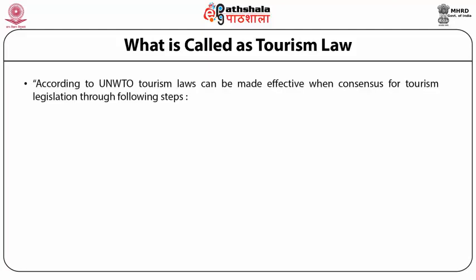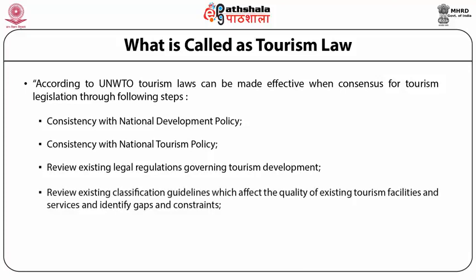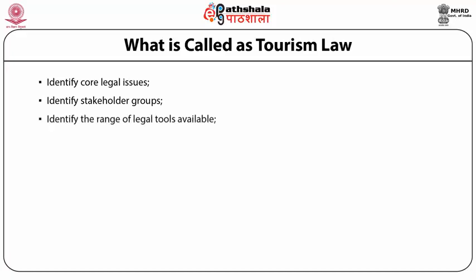According to the United Nations World Tourism Organization, tourism laws can be made effective when consensus for tourism legislation is brought through the following steps: first, consistency with the national development policy; then consistency with the national tourism policy; then a review of existing legal regulations governing tourism development; a review of existing classification guidelines which affect the quality of tourism facilities and services, identifying gaps and constraints; then to identify core legal issues; to identify stakeholder groups; and to identify the range of legal tools available and address the issue of enforcement.